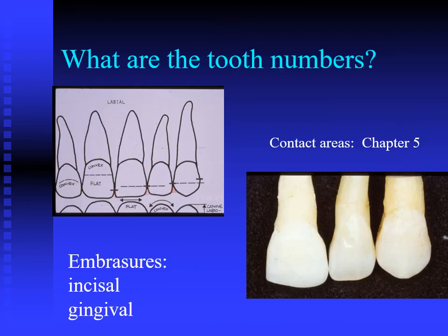Looking at slides like this is a nice opportunity to practice our tooth numbering system. Remembering the canines as numbers 6, 11, 22, and 27, as Dr. Chung mentioned, we know that this particular tooth is number 11.